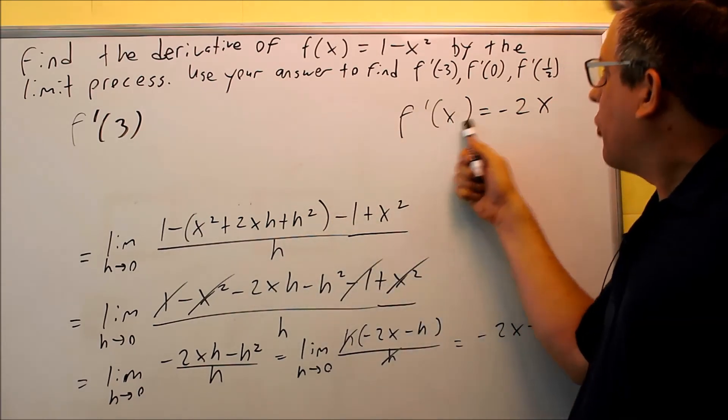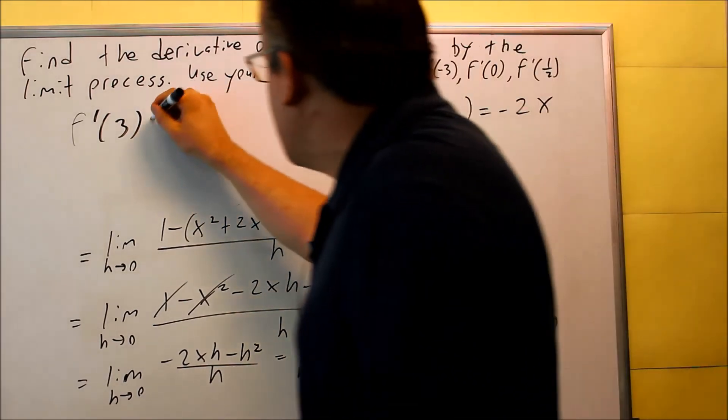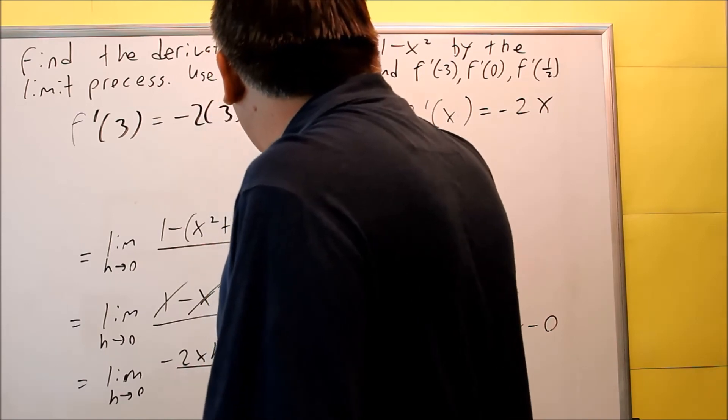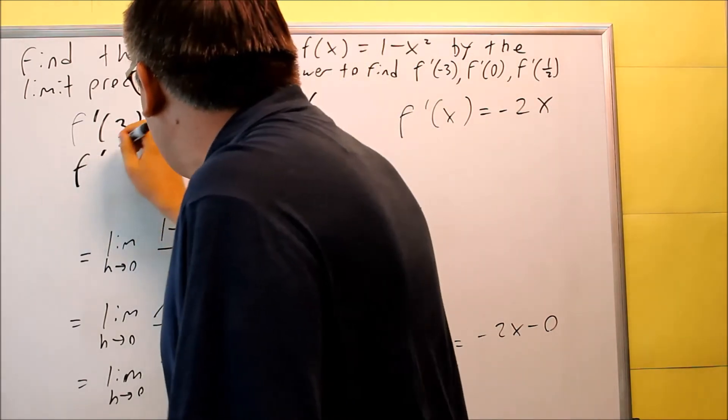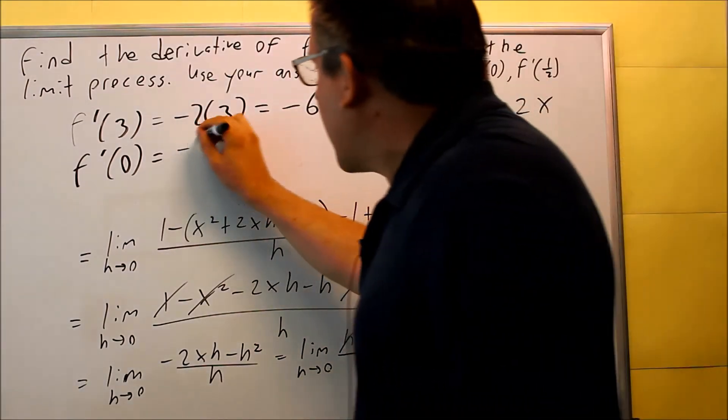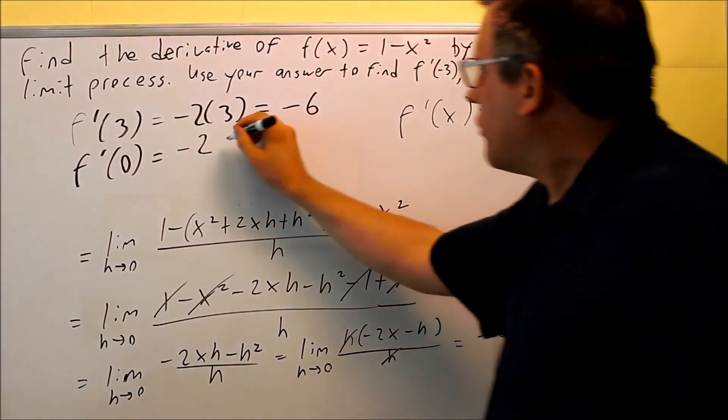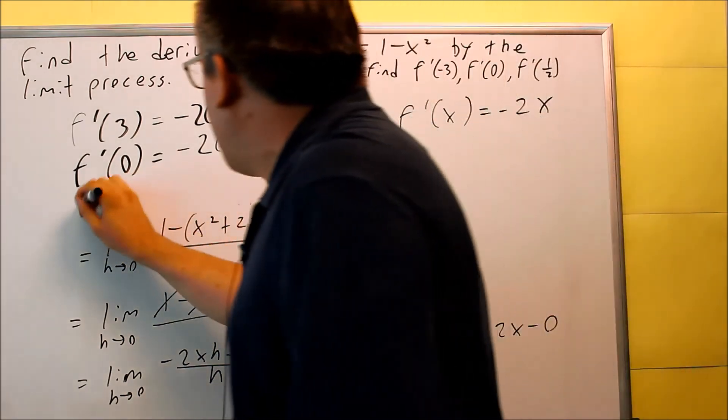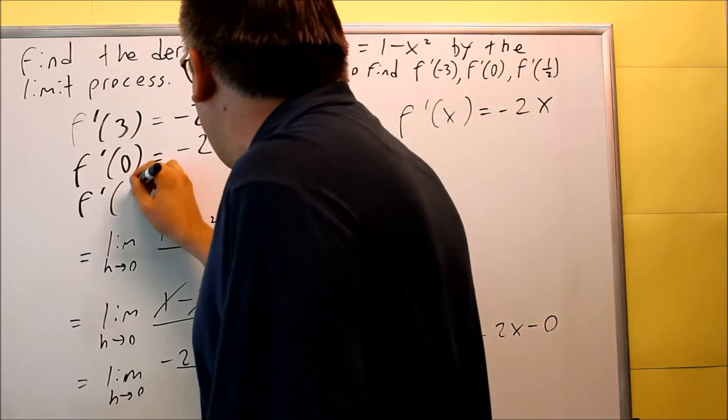That means you want to find the derivative, use the derivative function, and put a 3 in there for x. So this is going to be negative 2 times 3, which is negative 6. Then we're going to find the derivative at 0: negative 2x, using the same formula, negative 2 times 0 equals 0.